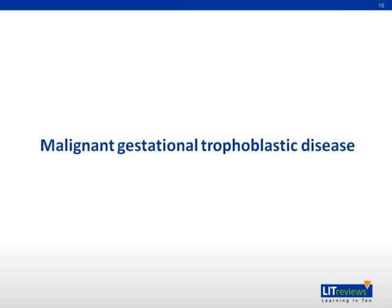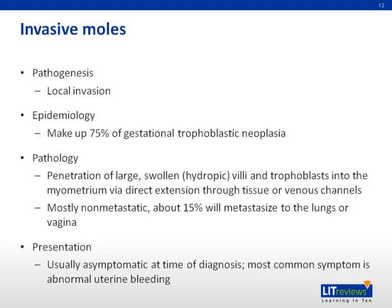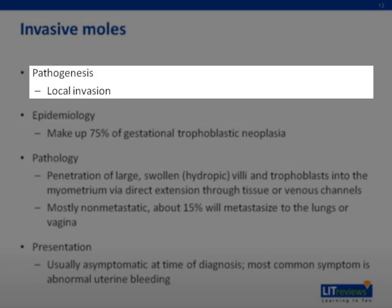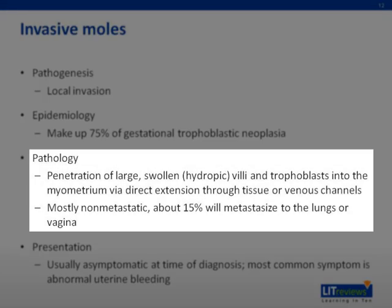In 20% of patients with a molar pregnancy, the hydatidiform mole undergoes malignant transformation to cause persistent or invasive disease. Risk factors for malignant transformation include maternal age above 40 years, extremely high beta-HCG levels, and the presence of theca-lutein cysts larger than 6 cm in diameter. Invasive moles are therefore more commonly associated with complete molar pregnancies. Invasive moles occur when there is local uterine invasion of a complete or incomplete mole, and make up 75% of gestational trophoblastic neoplasia. They are characterized by penetration of large swollen villi and trophoblasts into the myometrium via direct extension through tissue or venous channels. Most invasive moles are non-metastatic, with about 15% metastasizing to the lungs or vagina.